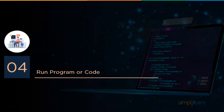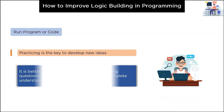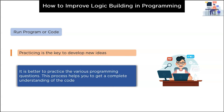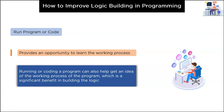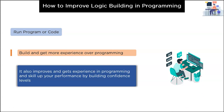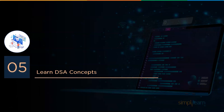Stage four is about running program or code. Practicing is the key to develop new ideas. One of the best ways to develop logic building in programming is learning data structures concepts, which provide an idea on how to build an algorithm. Running a program or code provides an opportunity to learn the working process and helps get an idea of how the program functions, which is a significant benefit in building logic and gaining experience in programming.